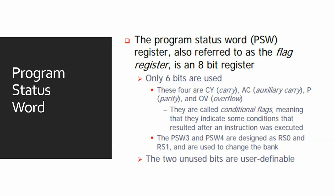The program status word 3 and program status word 4 are designed as RS0 and RS1, and are used to change the bank. The other two remaining bits are user-defined, meaning that the user can define them for a particular condition.